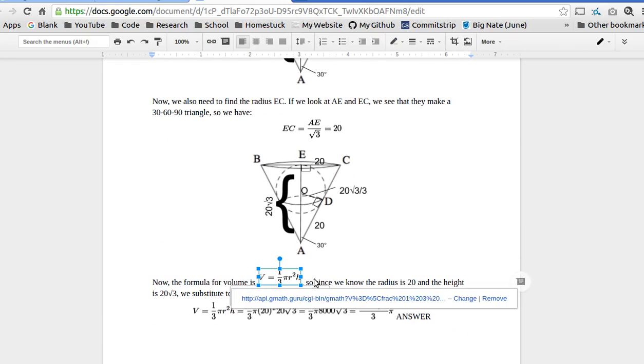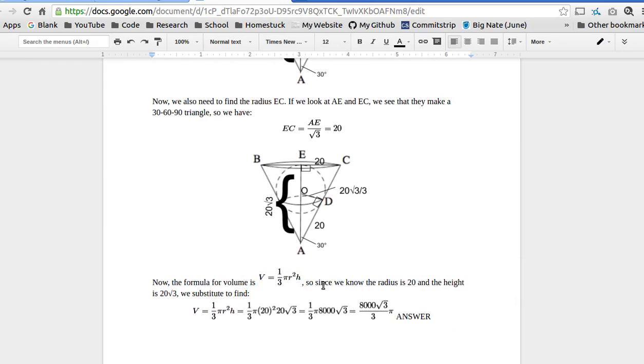And then the formula of the cone, which a lot of people sometimes forget. The volume of the cone is one-third pi r squared h. The radius is 20. The height is 20 square root of 3. So we substitute. We get one-third pi 20 squared, 20 square root 3. 20 squared is 400 times 20 is 8,000. So one-third pi 8,000 square root 3. So we get 8,000 square root 3 over 3 pi. And that is our answer.